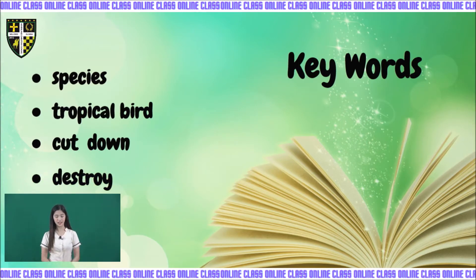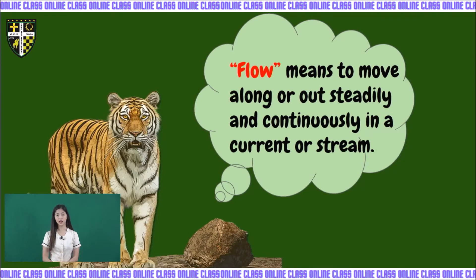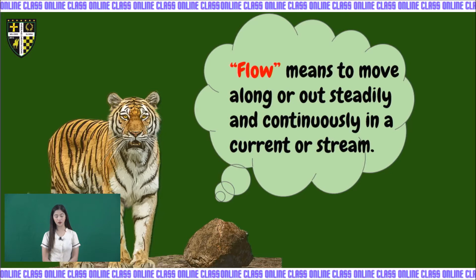So kids, those are our nine words. Now let's define them one by one. The first word is flow. What does the word flow mean? It means to move along or out steadily and continue in a current or stream. Flow is also known as the movement of water.